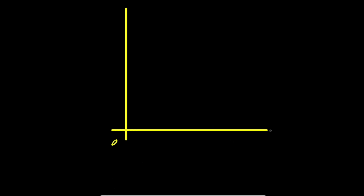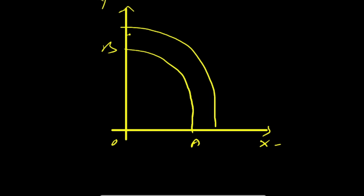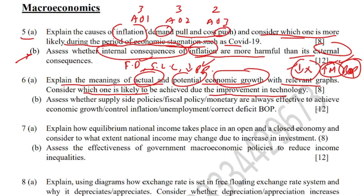For potential economic growth, the PPC is initially OAB. If there is an increase in the quantity or quality of resources, the PPC shifts to the right to CD — this is potential growth. If there is improvement in technology, that is an improvement in qualitative resources, so it will cause potential growth and shift the PPC to the right.